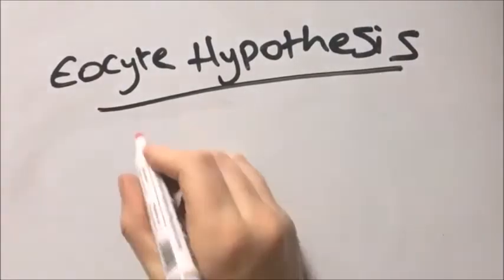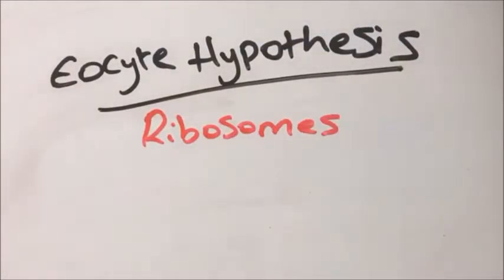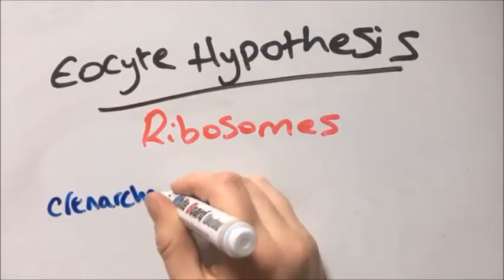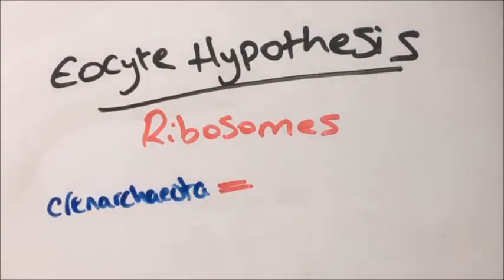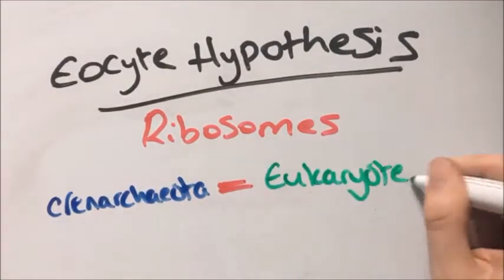This was hypothesized due to the shape of Queen Archaeota ribosomes being more similar to eukaryotic ribosomes than to bacterial ribosomes, or ribosomes of other archaea.